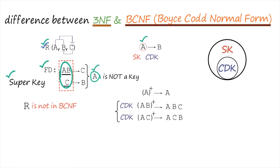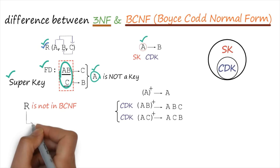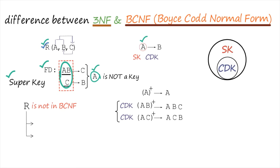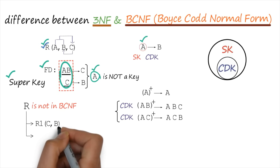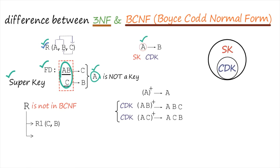If a particular relation is not in a normal form, we have to decompose it. The rule is: whichever functional dependency is creating the problem, keep those attributes together in one decomposed table. Here, AB→C is fine since AB is a candidate key, but C is not a candidate key. So C→B is the problematic functional dependency, and we keep C and B together in the first decomposed relation.